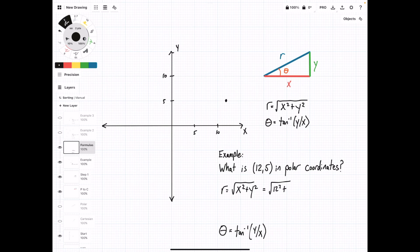So we have 12 and 5, so it's going to be 12 squared plus 5 squared, square root of 144 plus 25, square root of 169, r is equal to 13.